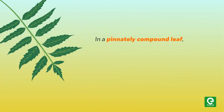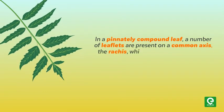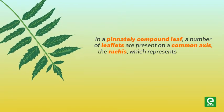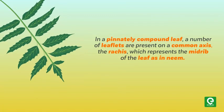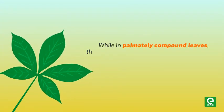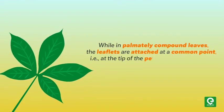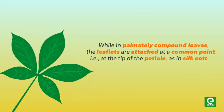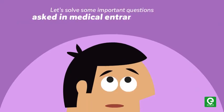In a pinnately compound leaf, a number of leaflets are present on a common axis called the rachis, which represents the midrib of the leaf. In palmately compound leaves, the leaflets are attached at a common point — that is, at the tip of the petiole — as in silk cotton.